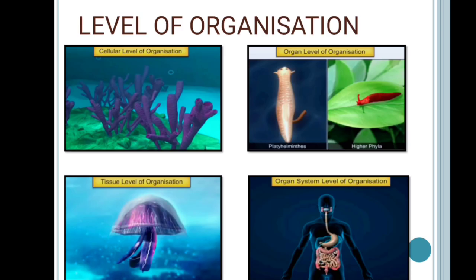Level of organization is the first basic fundamental feature, and it deals with the pattern of cell organization in animals. There are four basic patterns of cell organization: cellular, tissue, organ, and organ system. Sponges exhibit the cellular level of organization, where the cells are loosely arranged. Tissue level of organization is more complex and is displayed in cnidarians, where the cells that perform the same function are arranged in tissues.